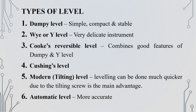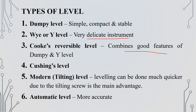The next one is the Y-Level. This is a very delicate instrument. The Y-Level features are combined with the Cooke's Reversible Level. The null features are combined and formed. This is the Cooke's Reversible Level, which is the 4th outline.